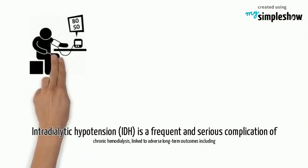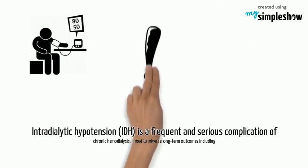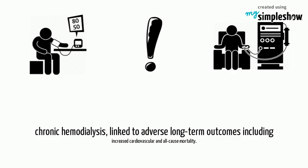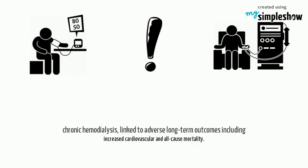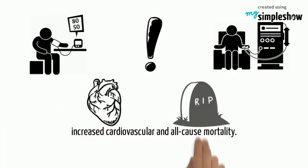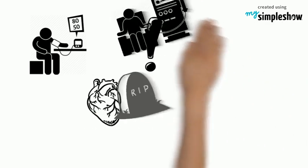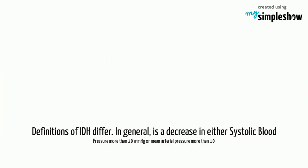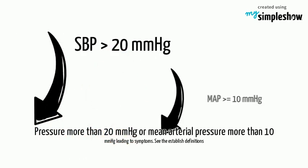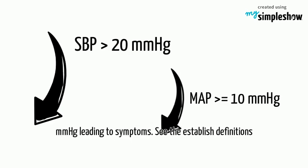Intradialytic hypotension, IDH, is a frequent and serious complication of chronic hemodialysis, linked to adverse long-term outcomes including increased cardiovascular and all-cause mortality. Definitions of IDH differ. In general, it is a decrease in either systolic blood pressure more than 20 mmHg or mean arterial pressure more than 10 mmHg leading to symptoms.